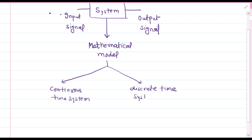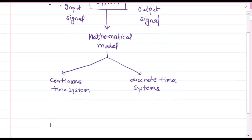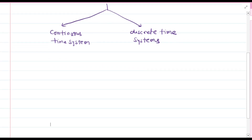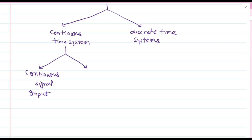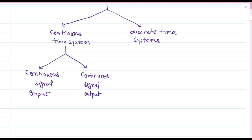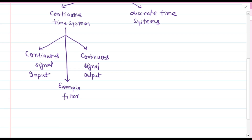A continuous time system processes input signals that vary continuously over time. The output of a continuous time system is also continuous over time. Examples of continuous time systems include analog filters, rectifiers, and attenuators, which are used to filter signals in electronic circuits.